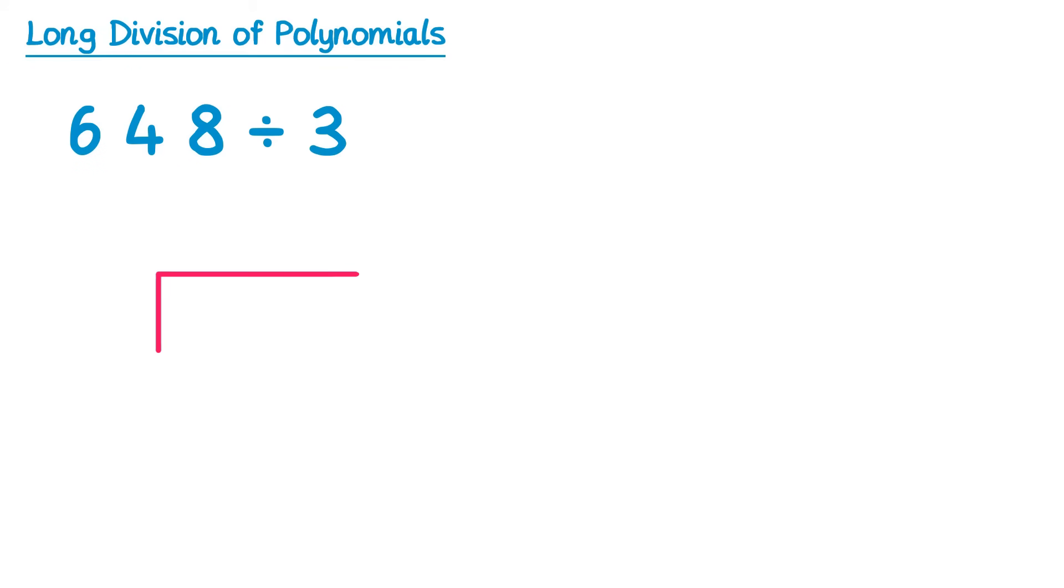So they would draw this bus stop shape, put 648 inside and 3 outside, and then do 3s into 6 which is 2, 3s into 4 which is 1 with 1 remainder, and then 3s into 18 which goes 6. And you get the answer 216, which is correct.